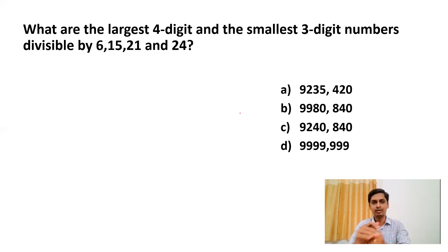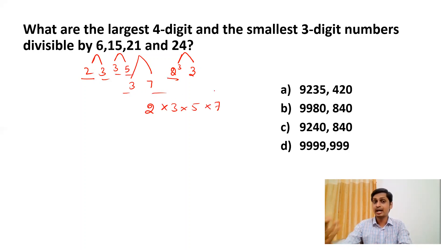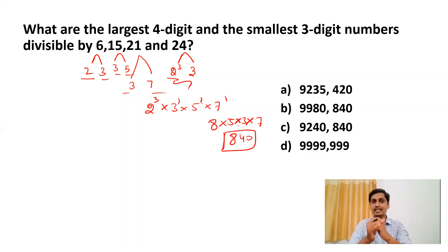We need to find the LCM of 6, 15, 21, and 24. We factorize: 6 = 2 × 3, 15 = 3 × 5, 21 = 3 × 7, and 24 = 2³ × 3. Now we write all prime factors — 2, 3, 5, and 7 — and take the highest power of each: 2³, 3¹, 5¹, and 7¹. So LCM = 8 × 3 × 5 × 7 = 40 × 21 = 840.